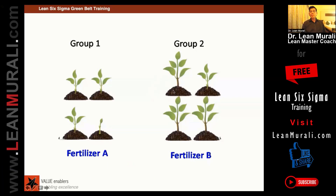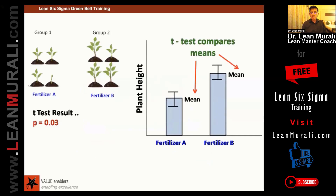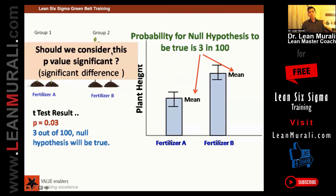You can see that here three plants have grown big and one is almost the same. And among the three, one is low — that can happen. So if you compare fertilizer A and B and compare the mean, the test result is 0.03. If p-value is low, the null must go. Only 3 out of 100 times the null hypothesis will be true. Now, should we consider this p-value as a significant difference?